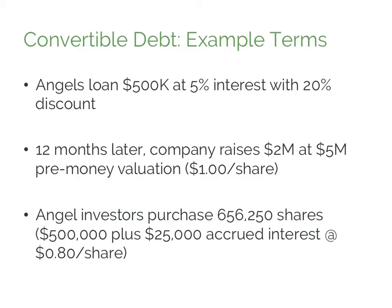Exactly 12 months from the close of the notes, the company raises $2 million from a venture capital investor in a Series A preferred equity financing at a $5 million pre-money valuation. Since the company has 5 million shares outstanding, the $5 million valuation translates to a $1 price per share. Because one year has elapsed, our angels have earned 5% interest on their $500,000, or $25,000, so the amount that will convert is $525,000.